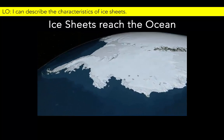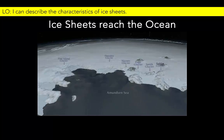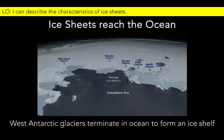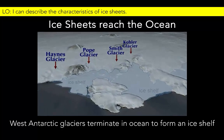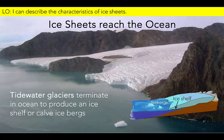Glacial ice flows from the thick interior of the ice sheet to the thinner margins. Antarctica is surrounded by ocean, and a glacier that ends in the ocean may be known as a tidewater glacier. There are many glaciers that flow off Antarctica and terminate in the ocean, where the ice can form floating ice shelves or break off to create icebergs.